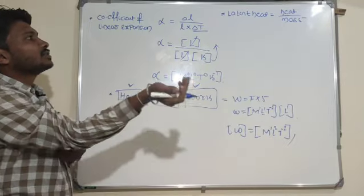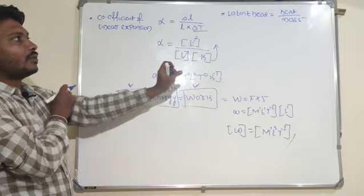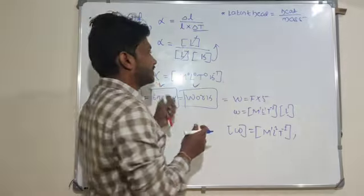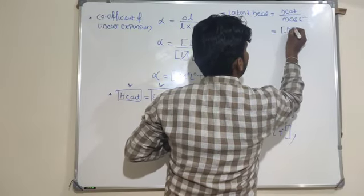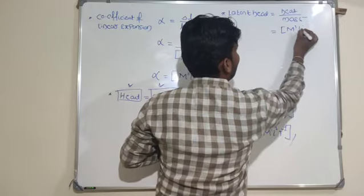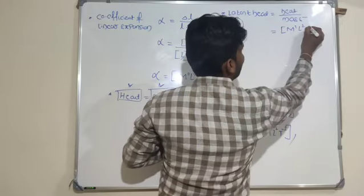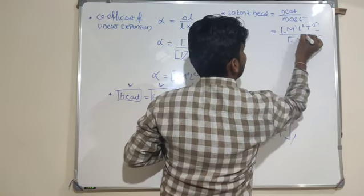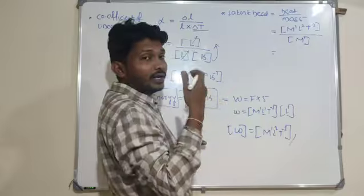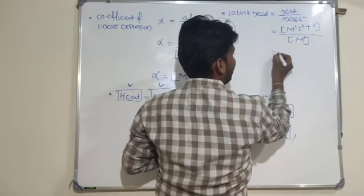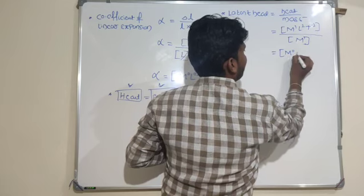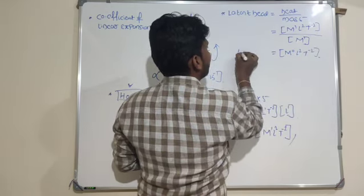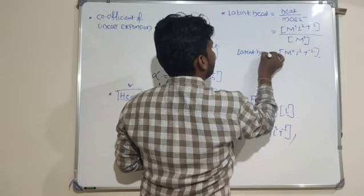The dimensional formula for latent heat: heat divided by mass. I know the dimensional formula for heat is M1 L2 T to the power of minus 2. In the denominator there is one more mass term M1, which goes to the numerator as M to the power of minus 1. So mass terms cancel to give M0 L2 T to the power of minus 2. This is the dimensional formula for latent heat.